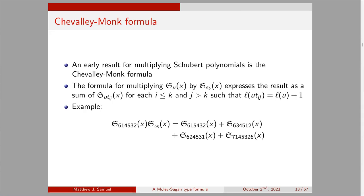For positive formulas for multiplying Schubert polynomials: an early one, though not originally phrased in terms of Schubert polynomials since they weren't yet defined, is the Chevalley-Monk formula. It gives a formula for multiplying an arbitrary Schubert polynomial S_u(x) by a degree-one Schubert polynomial S_{s_k}(x), expressing the result as a sum of S_{u·T_{ij}}(x), where the transposition T_{ij} ranges over all i ≤ k < j such that L(u·T_{ij}) = L(u) + 1.